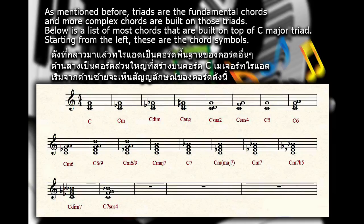Starting from the left, these are the chord symbols: C major, C minor, C diminished, C augmented, C suspended second, C suspended fourth, and C power chord.